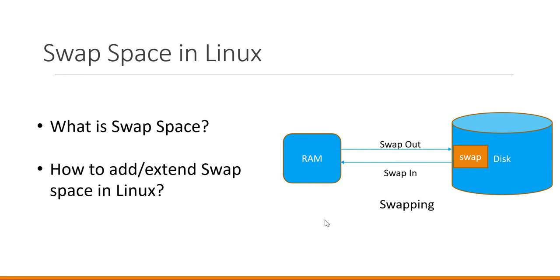When the CPU executes programs or applications in a computer, it will first load the corresponding application or program from the hard disk to the RAM, then it will execute corresponding instructions from the RAM. If it executes multiple applications at a time, the memory or RAM may not be sufficient, so the RAM will be full and it will not be able to load new programs or applications.